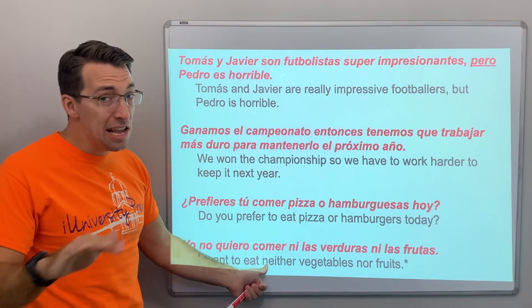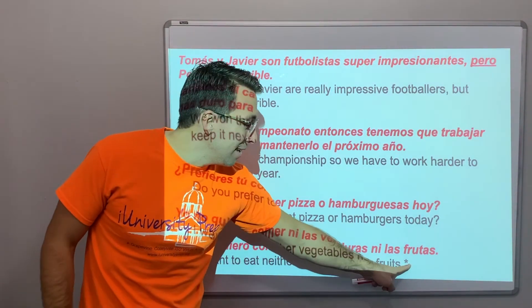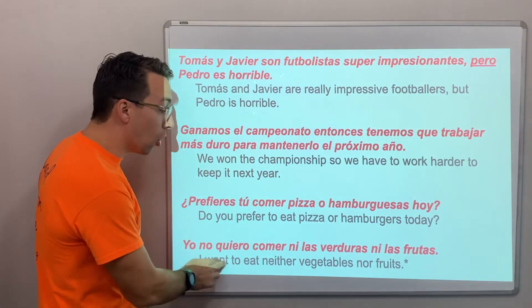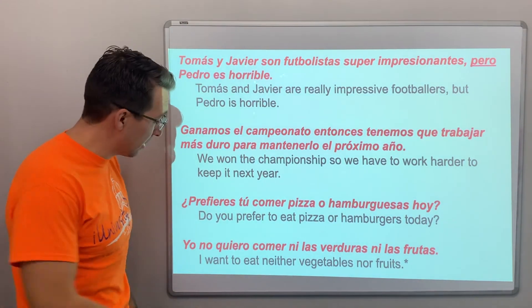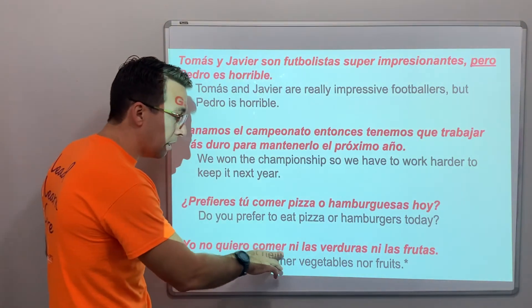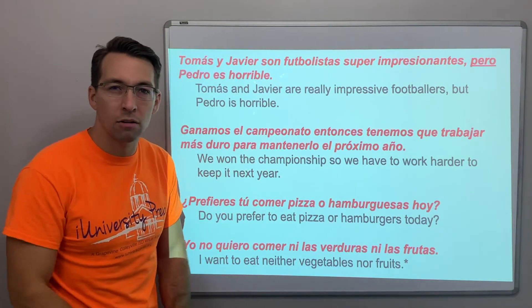Yo no quiero comer ni las verduras ni las frutas. I want to eat neither vegetables nor fruits. And remember, in English, you can't have double negatives, right? You can't have, so I don't want to eat neither. But in Spanish, you do have double negatives. Yo no quiero. I do not want to eat neither vegetables nor fruits. I just want bread. Only bread. Always.